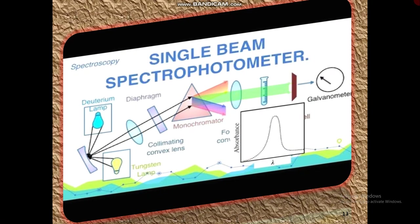The components of a single beam spectrophotometer are as follows. First, the source of radiation, which may be UV light, visible light, or IR radiation. UV light is obtained by heating a filament filled with hydrogen or deuterium gas. Second, a collimating convex lens, which collects all rays coming from the source. Third, a diaphragm, used to set 100% transmittance. Fourth, a monochromator — which can be a prism or diffraction grating — whose function is to separate polychromatic light from the source into monochromatic light of a single wavelength.